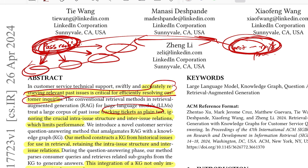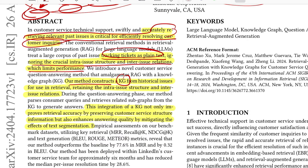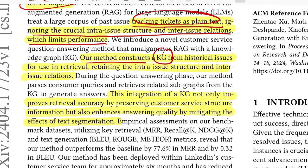These kinds of nuances or the granularity at which we can understand these issues is missing with the vanilla RAG approach wherein it's mostly about treating tickets as plain text, ignoring the crucial intra issue and inter issue relationships which limits the performance. Their method constructs a knowledge graph from historical issues for the retrieval part, retaining the intra issue structure and inter issue relations.